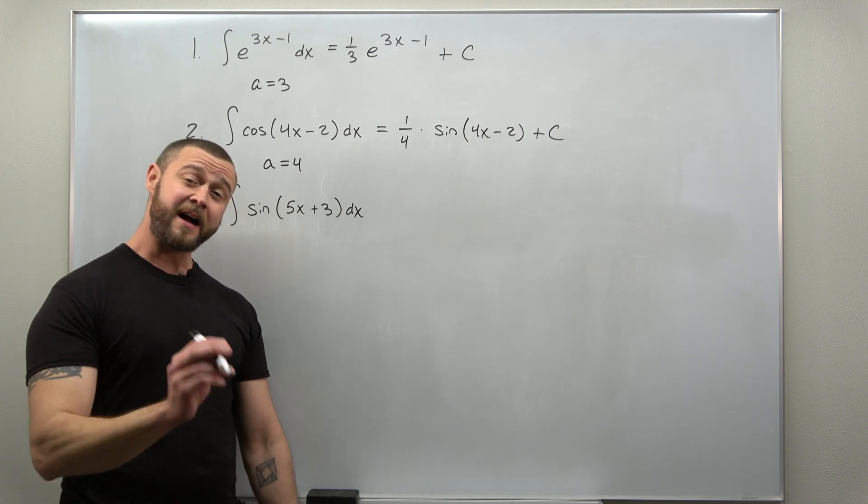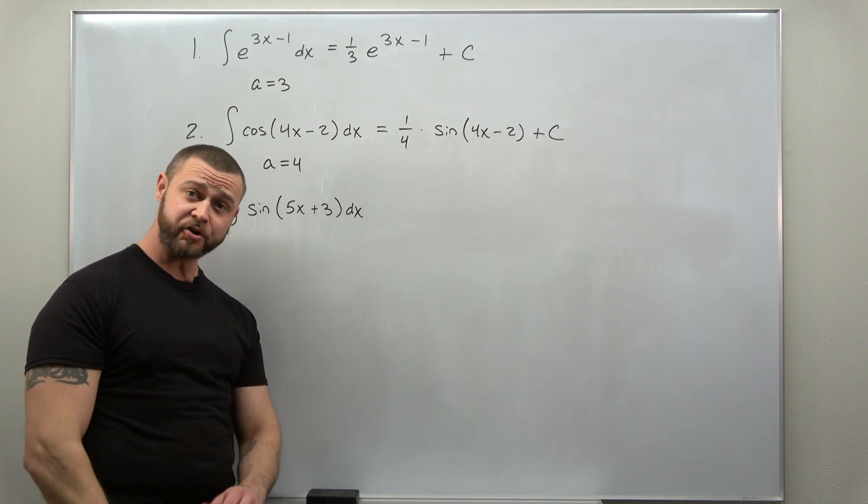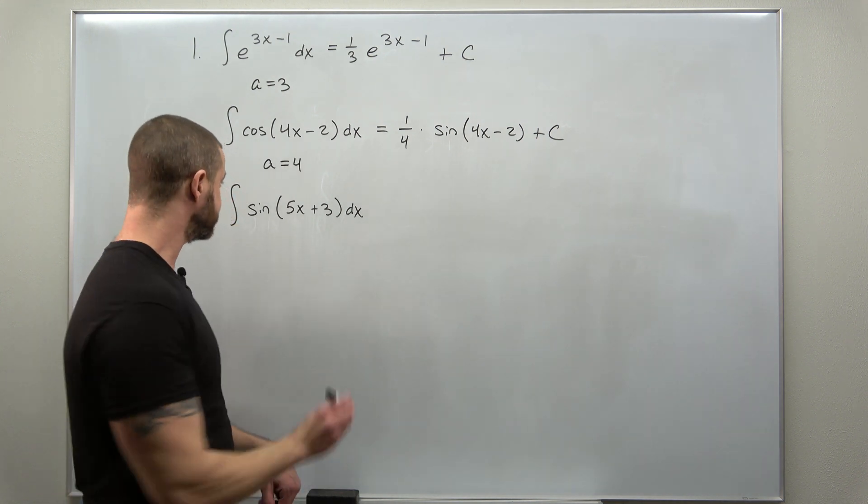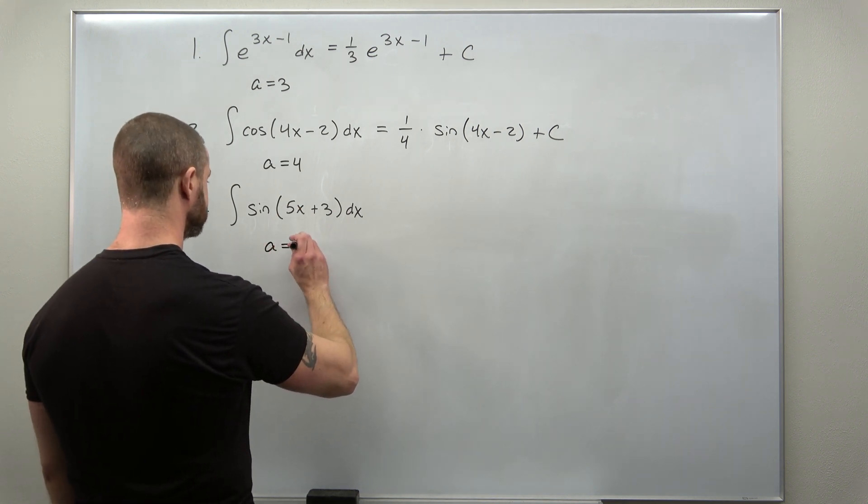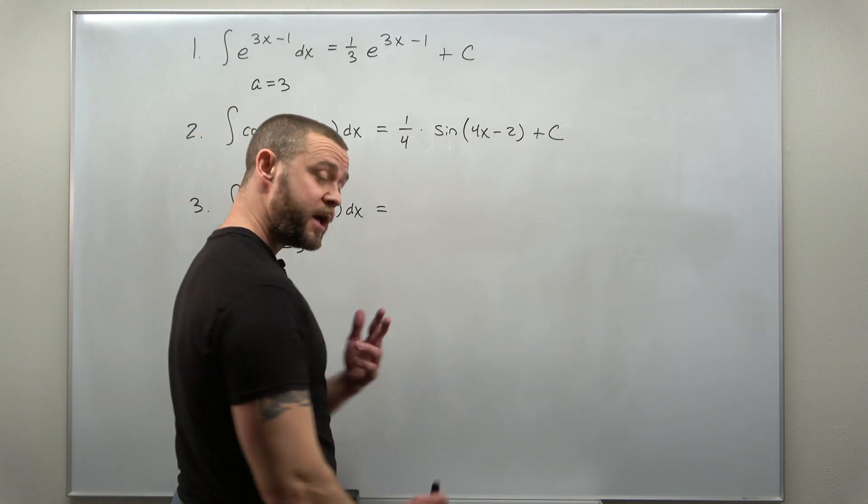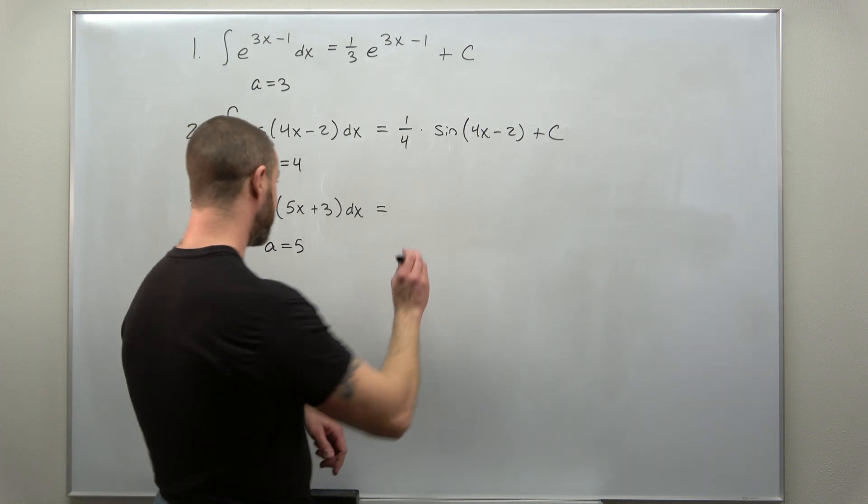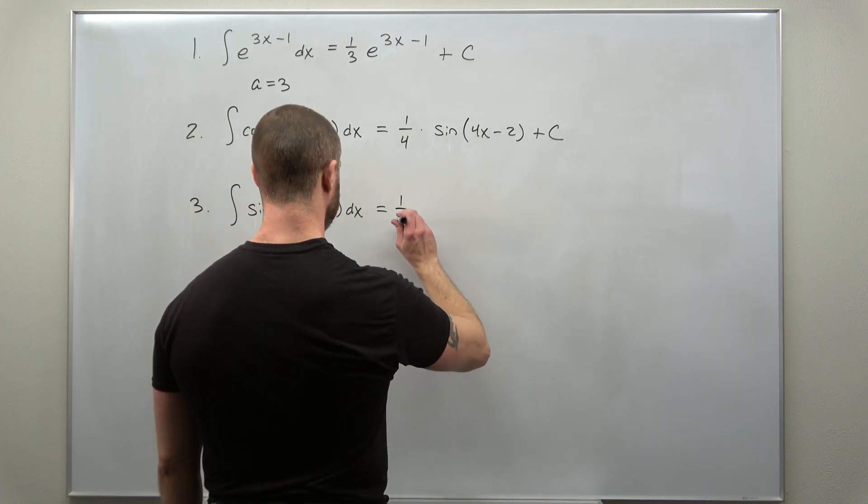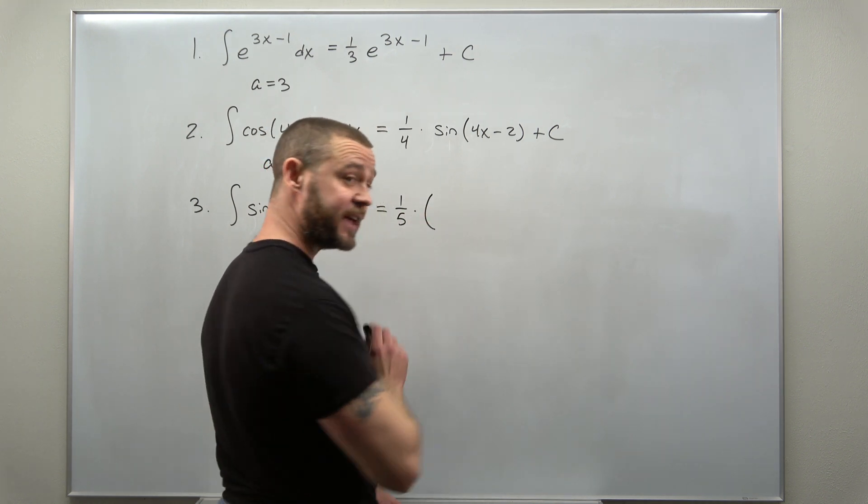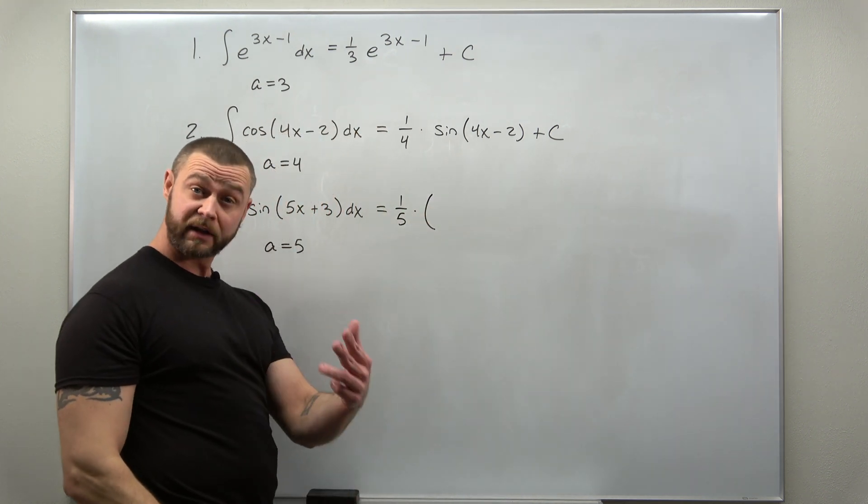We identify the value of a in the linear expression, the number multiplying x. Here that's 5 and our antiderivative we get a 1 over a factor, 1 over 5, and then times the basic antiderivative which for sine is negative cosine.